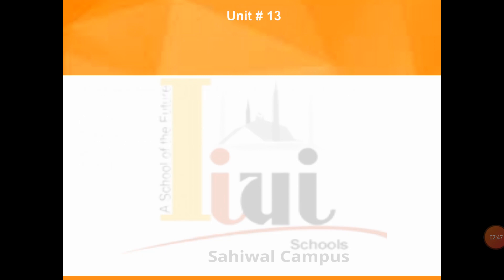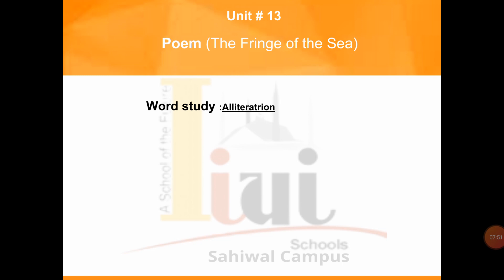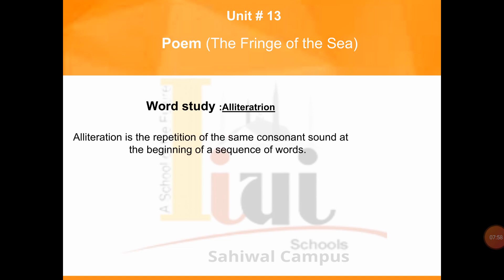Now let's move towards the next topic: alliteration. Alliteration is the repetition of the same consonant sounds at the beginning of a sequence of words in a poem. For example, 'she sells seashells by the seashore' — here the sound 's' is repeated. It looks very beautiful and interesting to read an alliterated sentence. Poems are often made up of alliterated sentences.